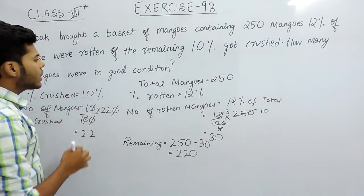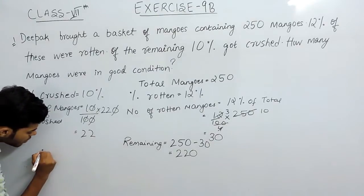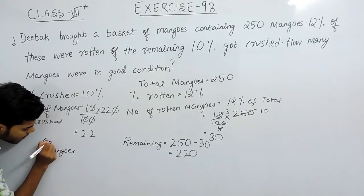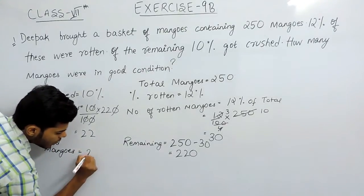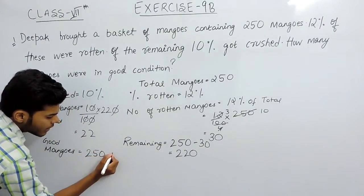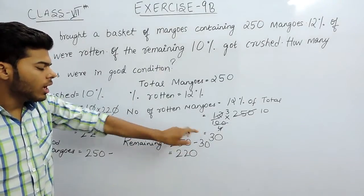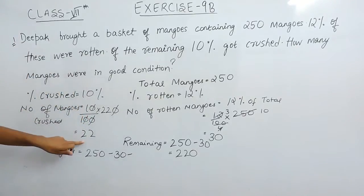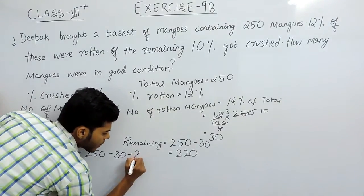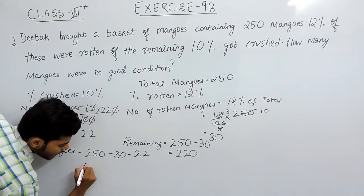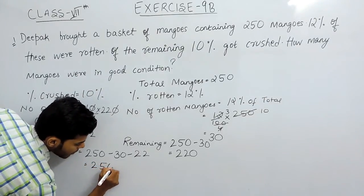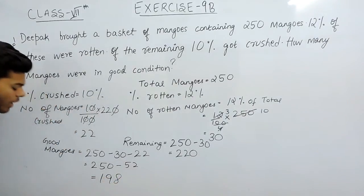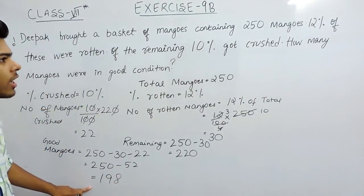The best way to find the good mangoes: good mangoes will be equal to total minus number of mangoes that got rotten minus number of mangoes that got crushed. That will be 250 minus 30 minus 22, which equals 250 minus 52, and that will be 198. So 198 mangoes are in good condition.